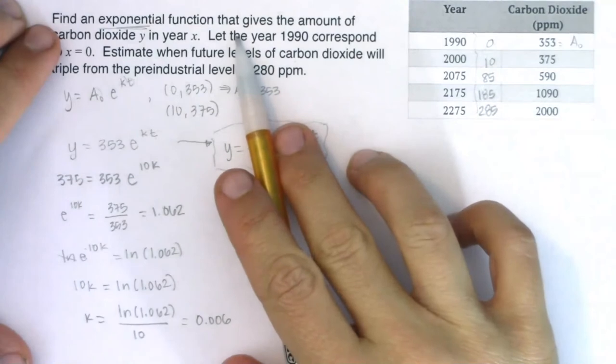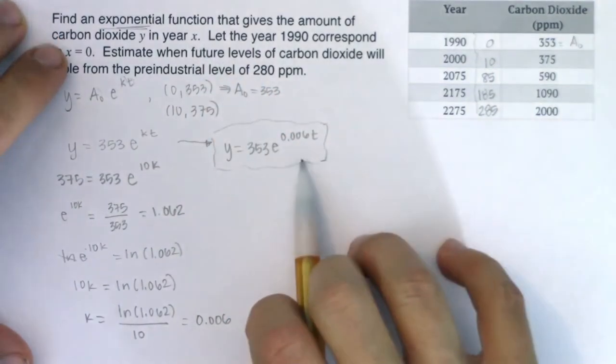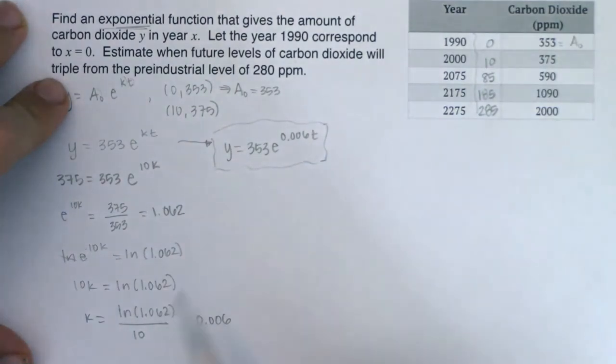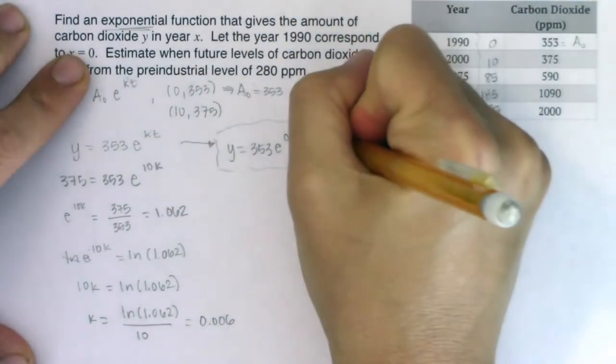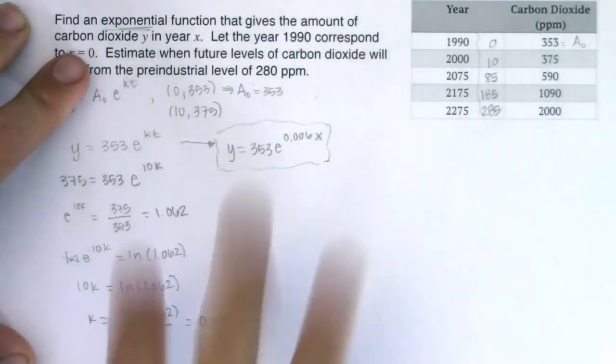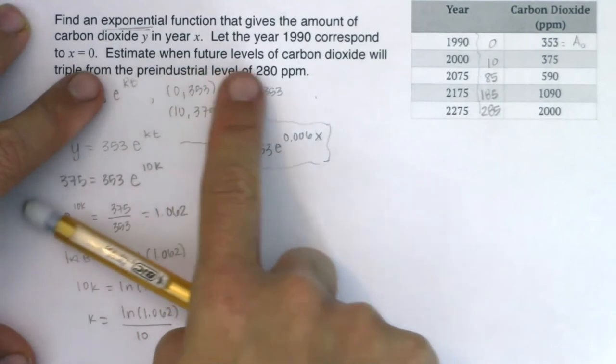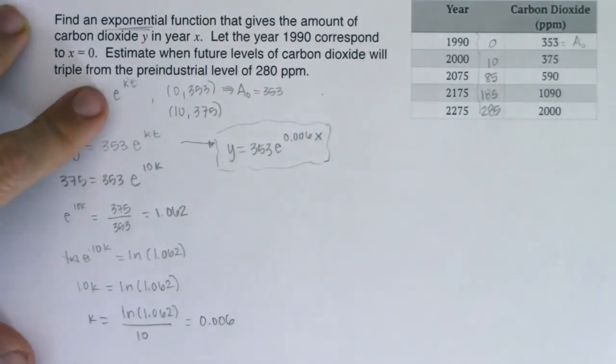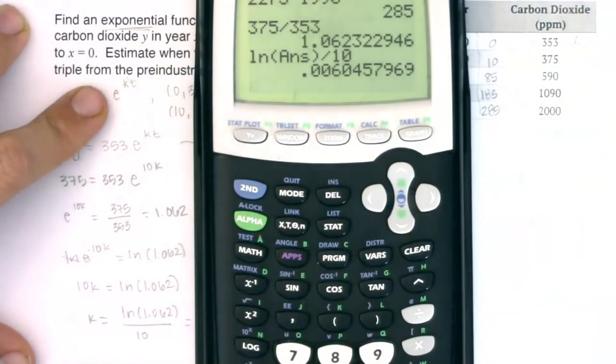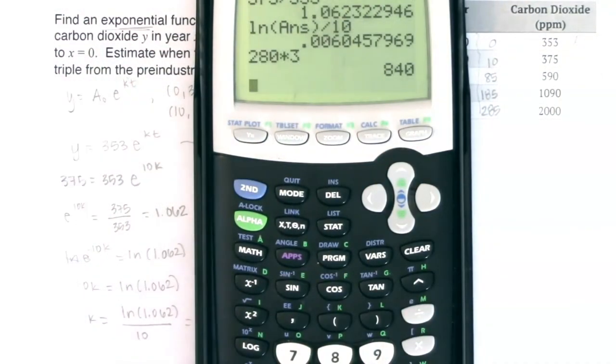That was the first part of the question. It said find an exponential function that gives the amount of carbon dioxide y in year x. Here it is. Keeping in mind that I used t here, they told me to use x, so let me use x. Now let's do this: estimate when future levels of carbon dioxide will triple from the pre-industrial level of 280 parts per million. If we want to triple from that, triple means multiply by three. So let's take 280 and multiply it by three. We are looking at 840.